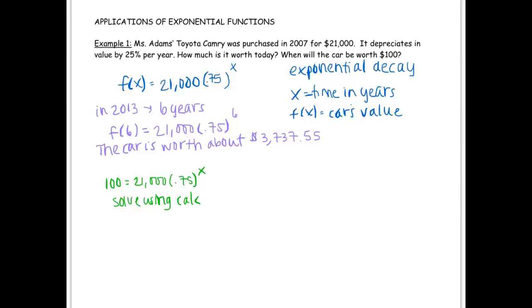I think the best way to do this is to probably graph 21,000 times 0.75 to the x and y equals 100. So you might want to take out your calculator now, maybe pause the video and type these two functions into your calculator. And you're going to get that point of intersection right there. And we're going to get that that point of intersection is 18.587, 100. So that means after 18.587 years, the car is going to be worth $100.